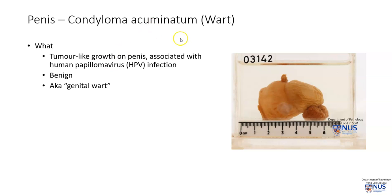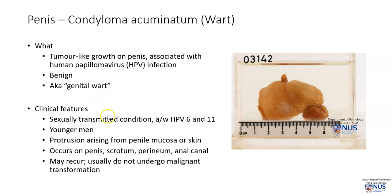Condyloma acuminatum, or wart, is a tumor-like growth on the penis, and this is associated with human papillomavirus, or HPV, infection. It is a benign lesion, also known as genital wart. This is a sexually transmitted condition, and it is usually associated with low-risk HPV types, HPV 6 and 11.